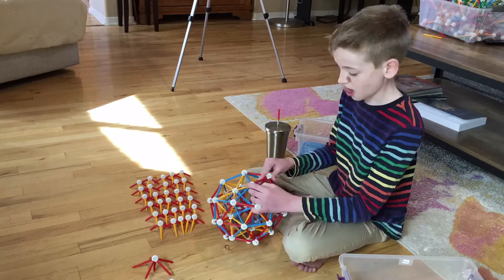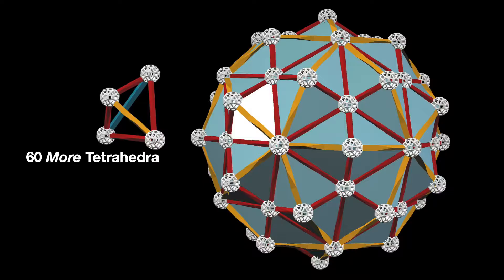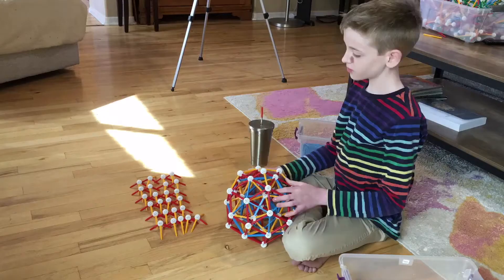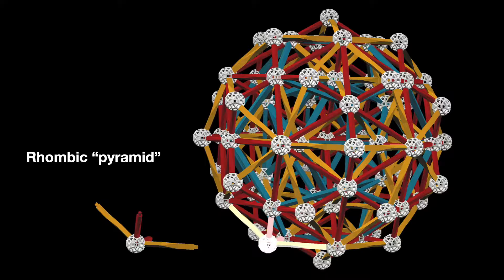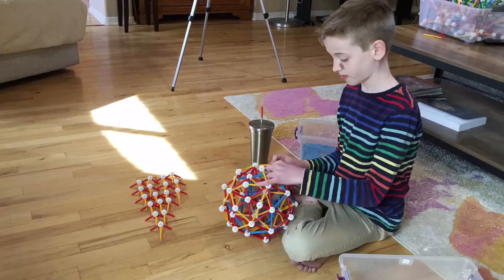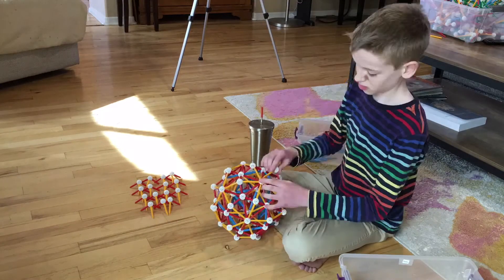Augmenting the rhombic triacontahedron are 60 more tetrahedra. It looks like rhombic pyramids. However, each of them are just groups of two tetrahedra.